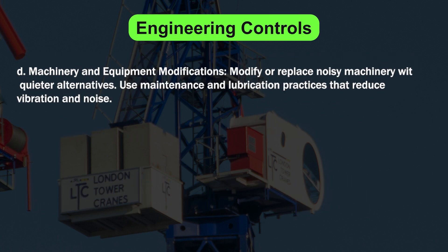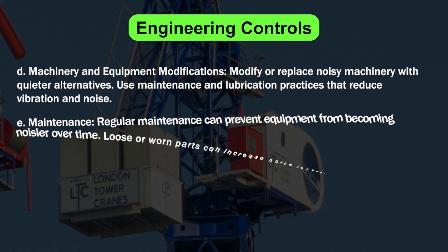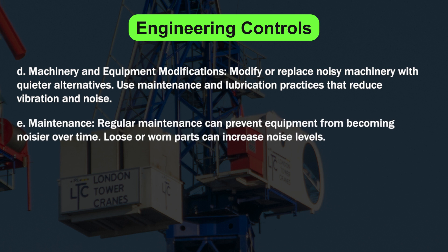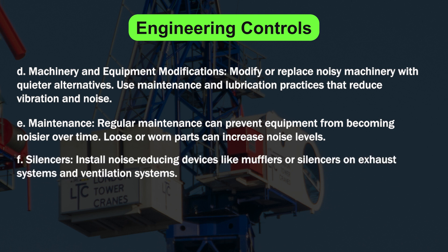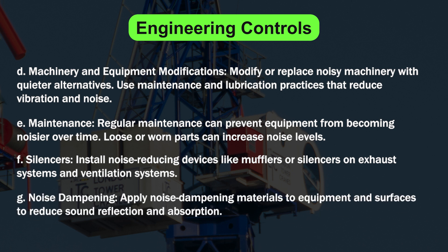Further engineering controls include machinery and equipment modification — replacing noisy machinery with quieter alternatives and using maintenance and lubrication practices that reduce vibration and noise. Regular maintenance can prevent equipment from becoming noisier over time, as loose or worn parts increase noise levels. Installing noise-reducing devices like mufflers or silencers on exhaust and ventilation systems, and applying noise-dampening materials to equipment surfaces to reduce sound reflection and absorption.